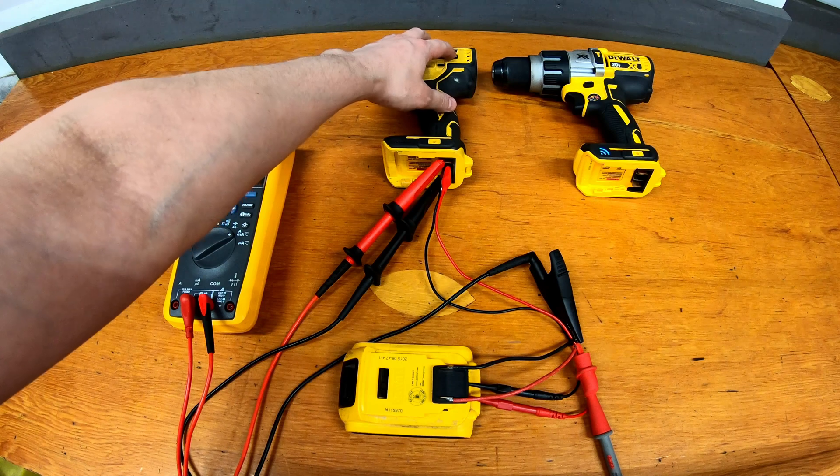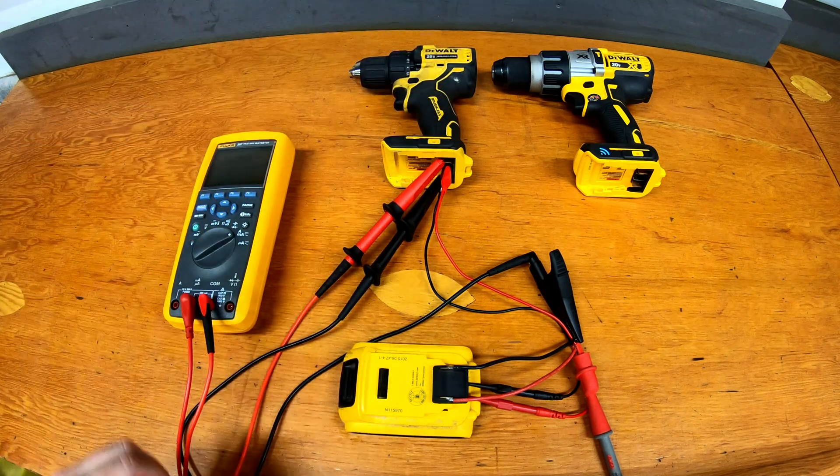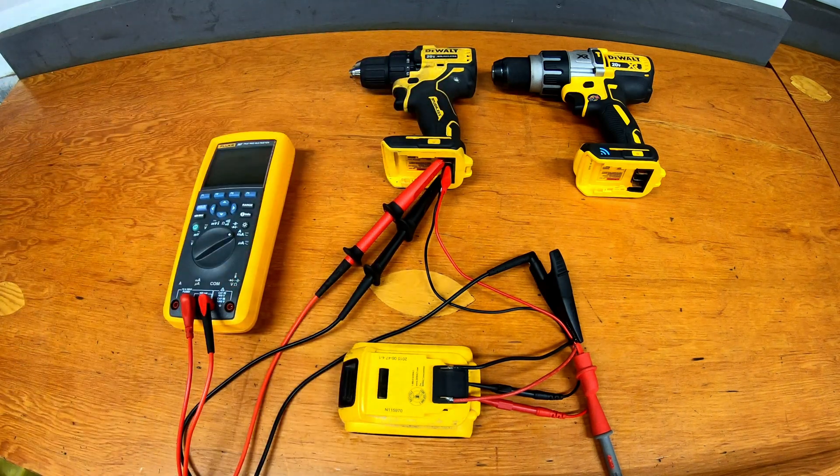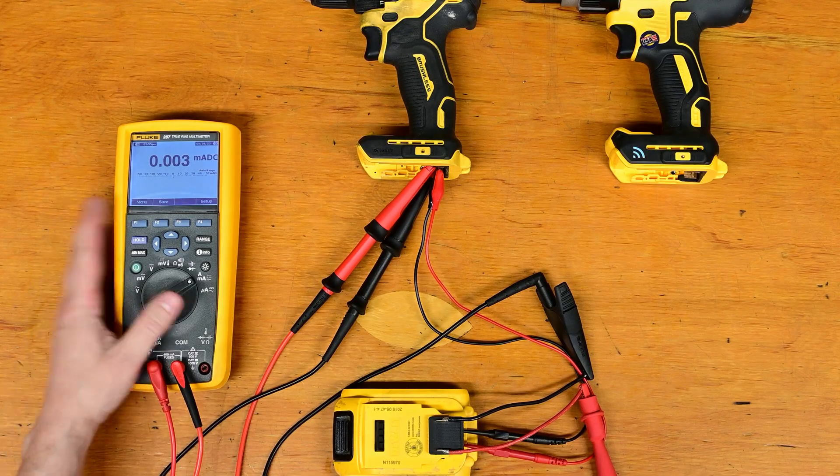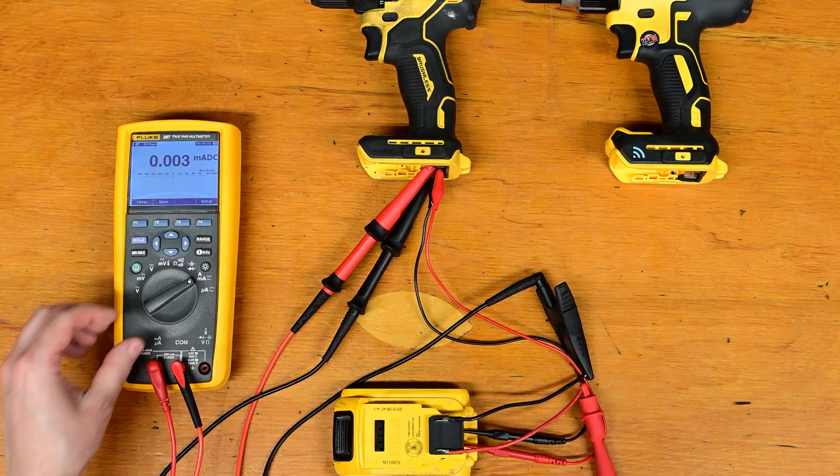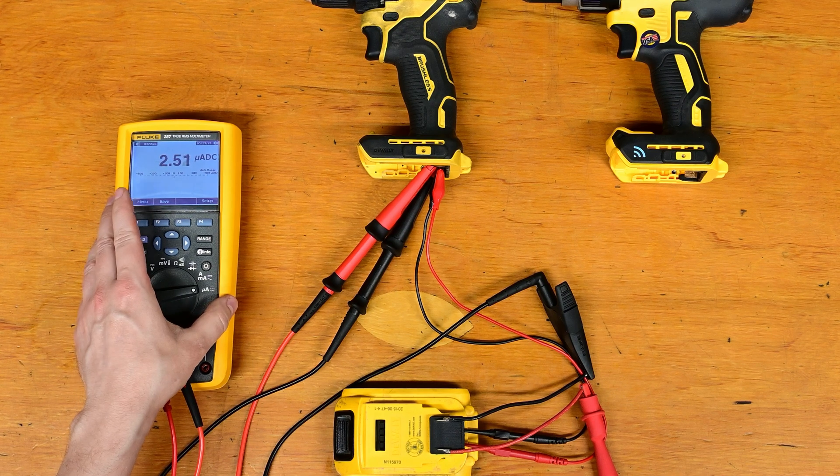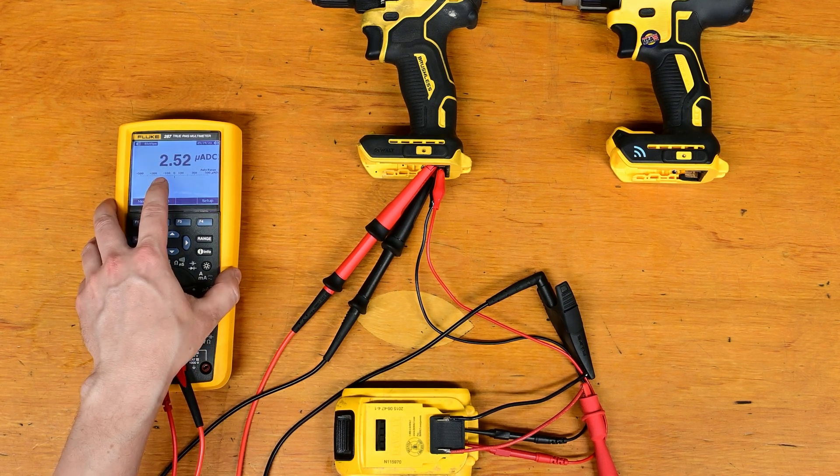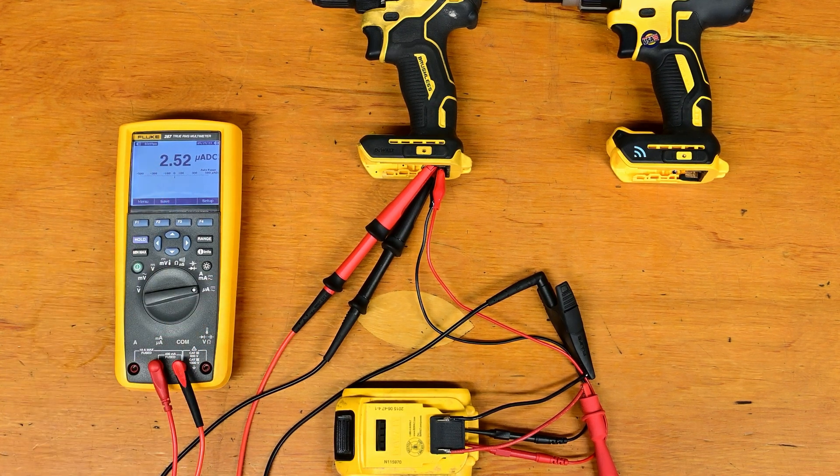This is the atomic cordless drill so fairly recent model but also quite basic and a brushless tool at that. If we take a look at the meter here we're reading in milliamps right now. I'm going to switch down to microamps and that'll give us a much closer reading and you can see here we're reading about 2.5 microamps.